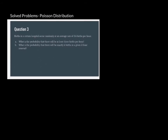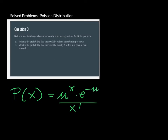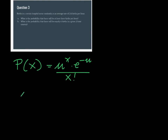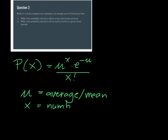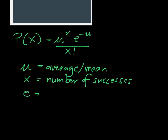Once you recognize that the problem is a Poisson distribution, to find a probability we make use of the formula: mu raised to x, times e raised to the negative mu, over x factorial. Here, mu is the average or the mean, x is the number of successes — how many outcomes you want — and e is Euler's number, approximately 2.something, which you can use directly from the calculator.